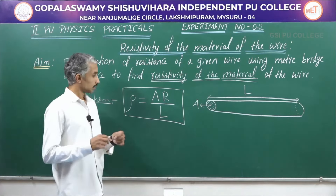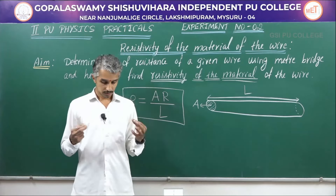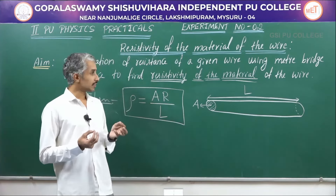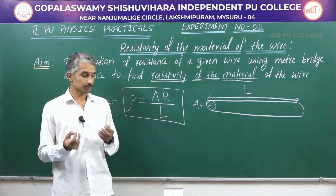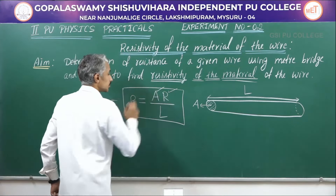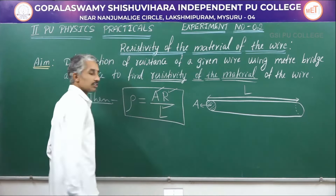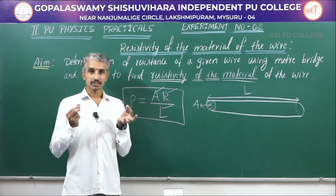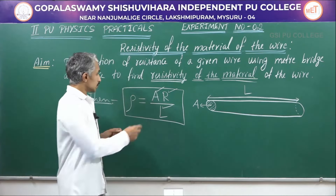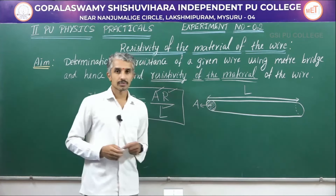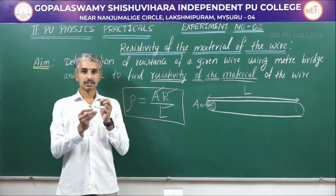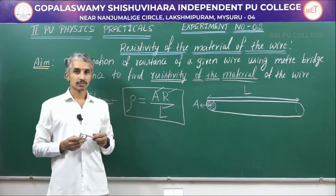Today we are given a wire made of nichrome. To find the resistivity of nichrome, I need to know the resistance of the wire, the area of cross section, and the length of the wire. Finding the length is very easy — a meter scale will do. To find the area of cross section, I will use a screw gauge to find the diameter, from which I can calculate the area.